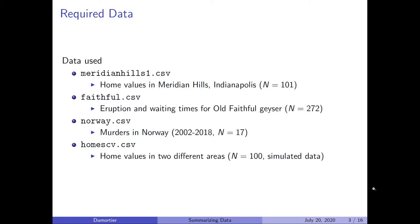We will use a dataset called MeridianHills1.csv, which represents home values in the Meridian Hills district in Indianapolis. We have a dataset called Faithful, representing the eruption and waiting times of Old Faithful Geyser — this comes with the statistical software R. Then we have a Norway dataset representing the number of murders in Norway between 2002 and 2018. Finally, we have simulated home values in two areas in holmescv.csv, used to illustrate the coefficient of variation.